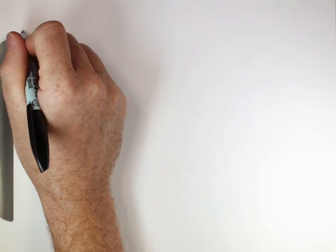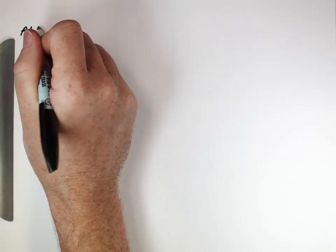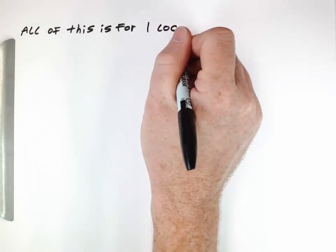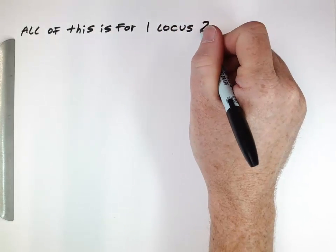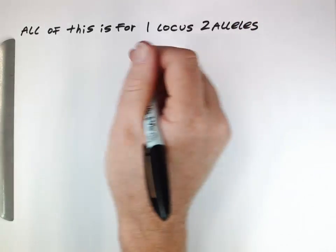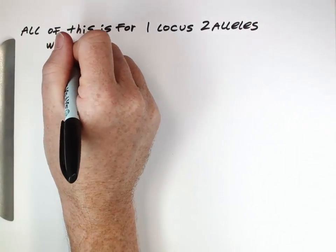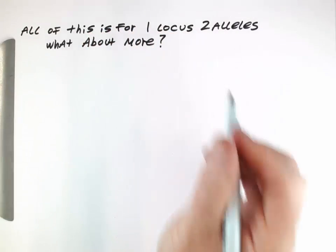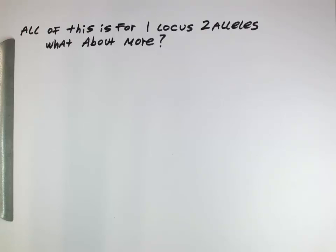In the previous videos we've been thinking about one locus with two alleles. So what about more? Most traits are in fact the result of a number of different loci and a number of different alleles. If you think about your height, it's not just one locus and two alleles that determine how tall you are — it's a number of different loci all combining together to result in your height.